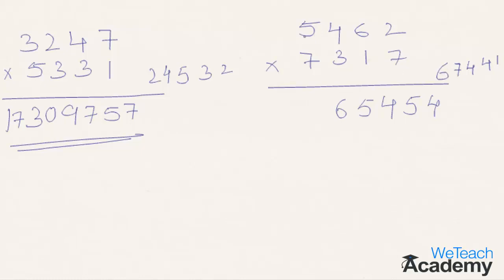In the next step, 5 into 3 is 15, plus 7 into 4 is 28, giving 43. Plus the carry of 6, gives 49. So 9 is written in the final answer and 4 is carried to the next step. In the final step, 7 into 5 is 35, plus the carry of 4, gives 39. So 39 is returned in the final answer. The result for 5462 multiplied by 7317 is 39965454.